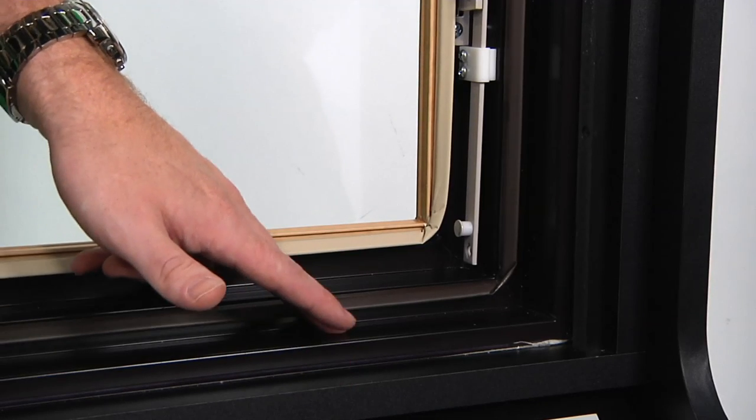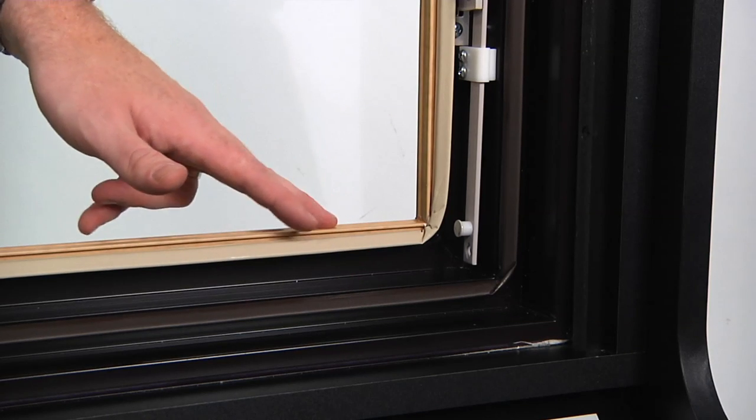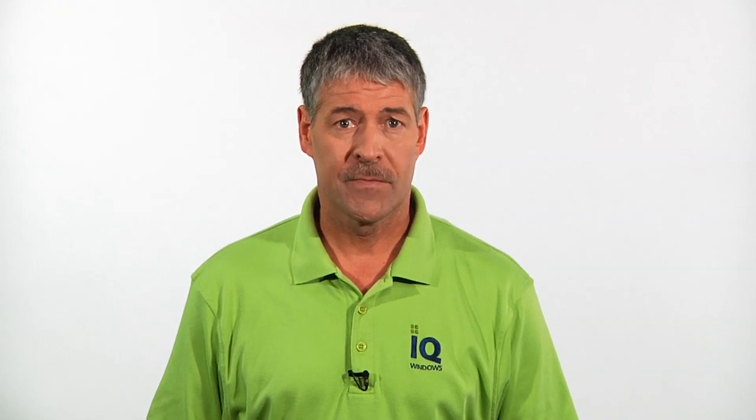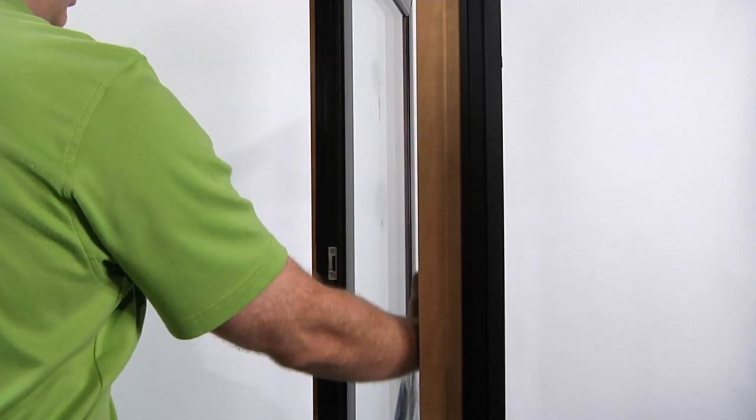Our casements have a beautiful stepped frame design compared to simple one-dimensional styles. Egress hardware is available to maximize net opening when window dimensions are tight for egress code requirements. Standard hardware allows easy and safe cleaning from the inside of your home. Our casement crank handle is reinforced inside the frame to maximize durability and hassle-free operation.